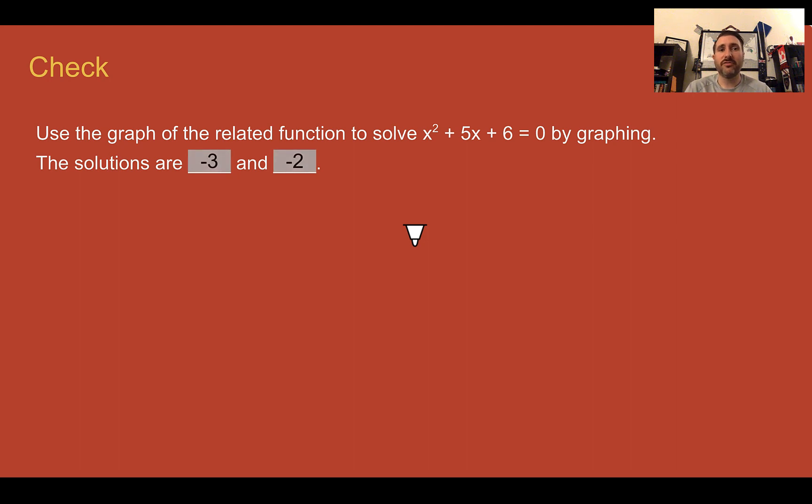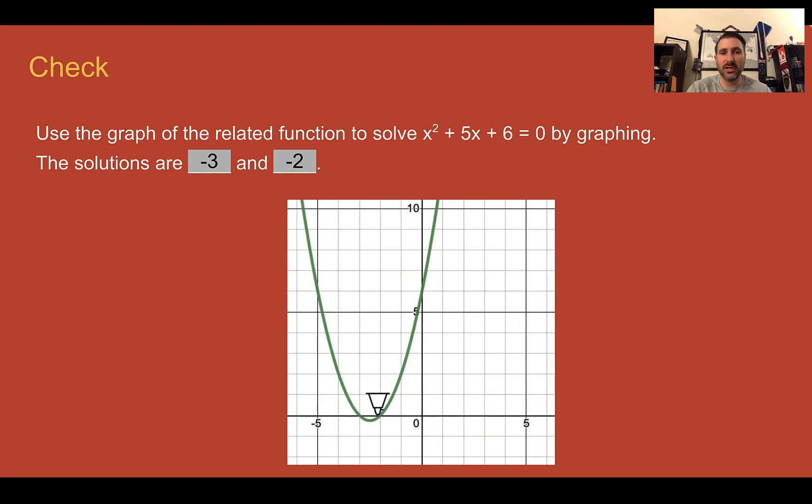Check your answer. You should have found that the solutions are at negative three and negative two. If you graph it, it looks like this. We can see our two values. So negative two is here, negative three is here. Those are your solutions. And again, we want to write it x equals negative three and x equals negative two.